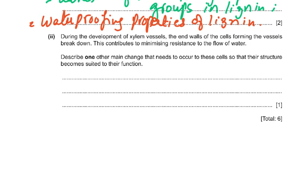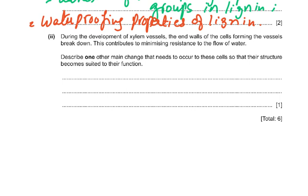During xylem vessel development, the end walls break down to minimize resistance to water flow. One other main change: loss of cell contents — they become hollow — including loss of cytoplasm, loss of the nucleus, and formation of pits which allow lateral movement of water.